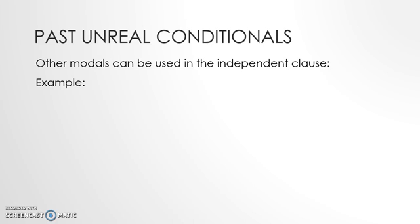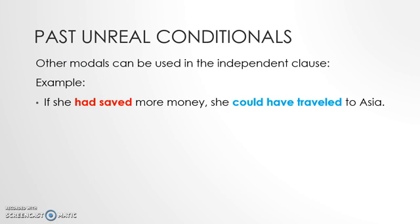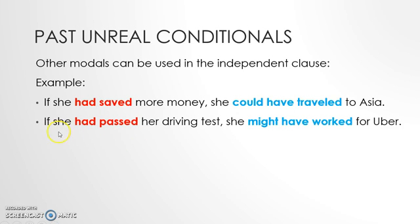When we write past unreal conditionals, we can also use other modals in the independent clause. For example: 'If she had saved more money, she could have traveled to Asia.' In this case, in the if clause we use past perfect, and in the independent clause instead of using 'would,' we use 'could have traveled.' Another example: 'If she had passed her driving test, she might have worked for Uber.' Again, in the if clause we use past perfect, and in the independent clause we use 'might have worked,' replacing 'would' with 'might.'